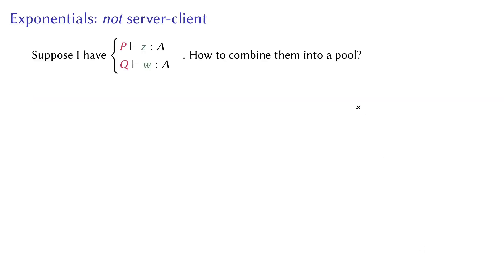That sounds alright, until we have to construct concrete examples. Suppose I have two processes, or two clients P and Q, each exposing an A channel, which is the client protocol. And the question is how to combine them into a pool.